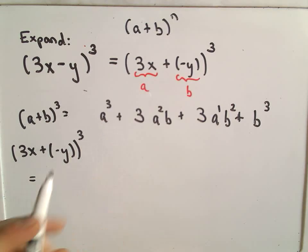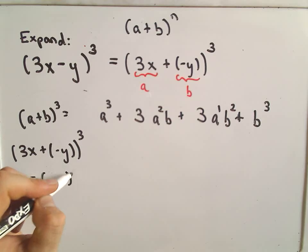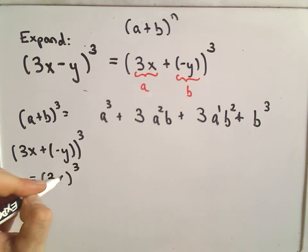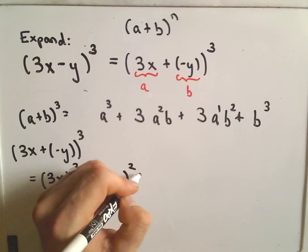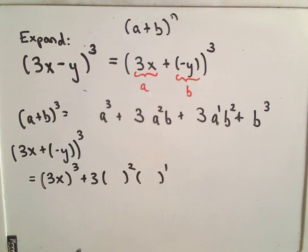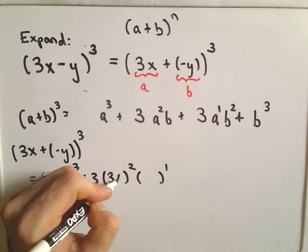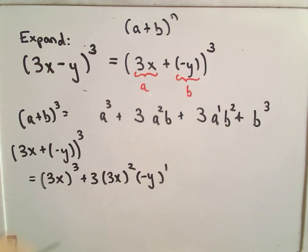So it says a cubed, so we had a cubed, that's now going to be 3x cubed, plus 3 times, well, we had a squared and b to the first power. Again, a is 3x, b is negative y.